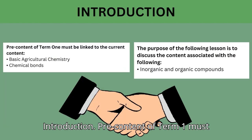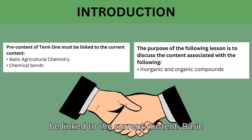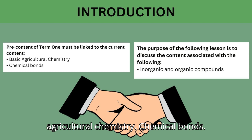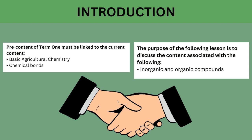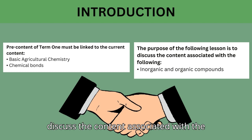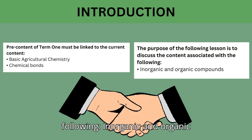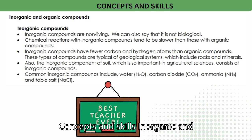Introduction. Pre-content of term 1 must be linked to the current content: basic agricultural chemistry and chemical bonds. The purpose of the following lesson is to discuss the content associated with inorganic and organic compounds. Concepts and skills: inorganic and organic compounds.